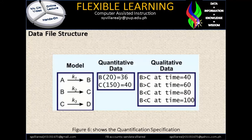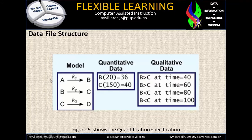Figure 6 shows the quantification specification. We have here the model and this is mathematics. A goes to K1B, B to K2C, and C to K3D. This is what you call the data itself and they are used as a model — like A, B, C — interpreted as the direction or flow as K1, K2, K3. The second component is quantitative data from the word quantification specification.